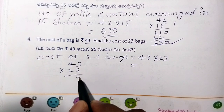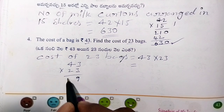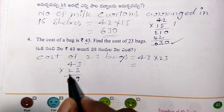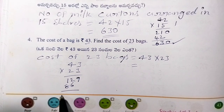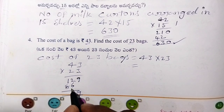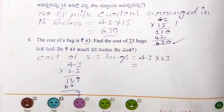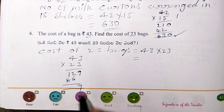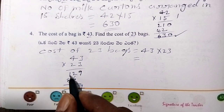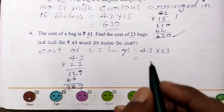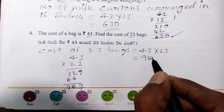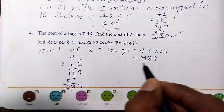3 threes are 9. 3 fours are 12. 2 threes are 6. 2 fours are 8. So, it is 9. 6 plus 2. 8 plus 1 is 9. 989. Total cost is 989.